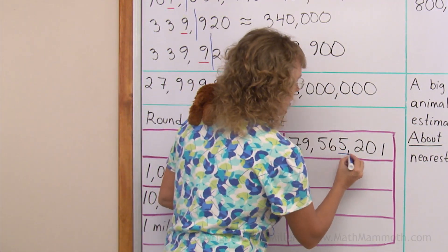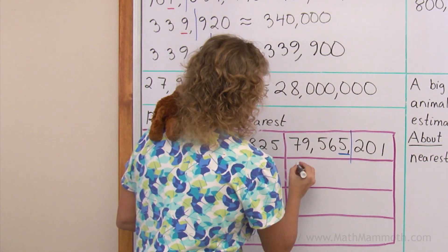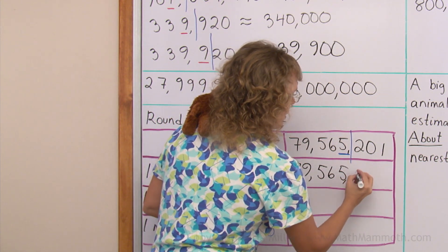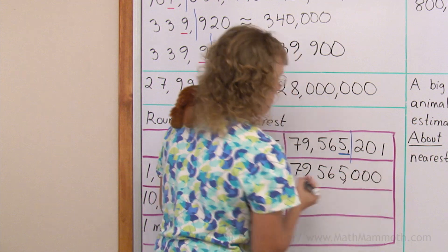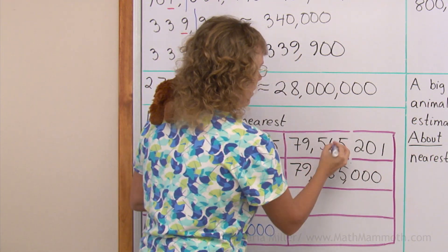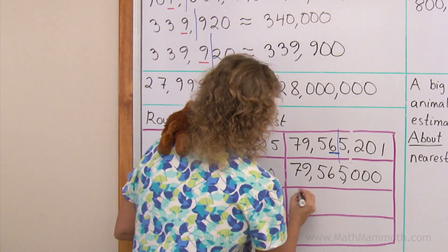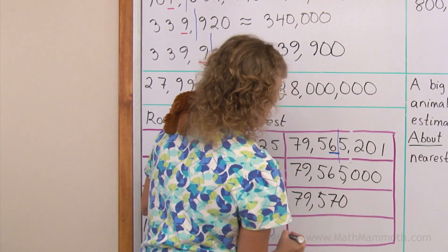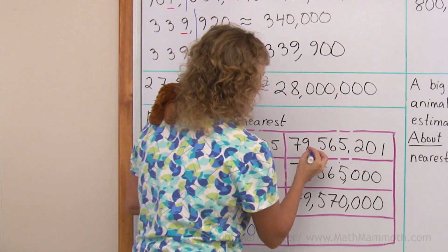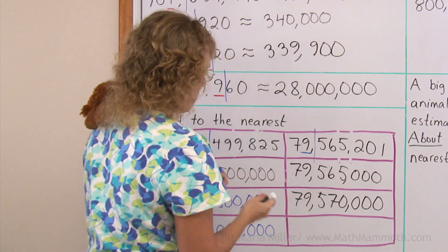Over here to the nearest thousand first, 2 means we round down, so 79,565,000. Then to the nearest 10,000, 5 means we round up, 570,000 here. Lastly to the nearest million, 5 means we round up, so we get here 80, 80 million.